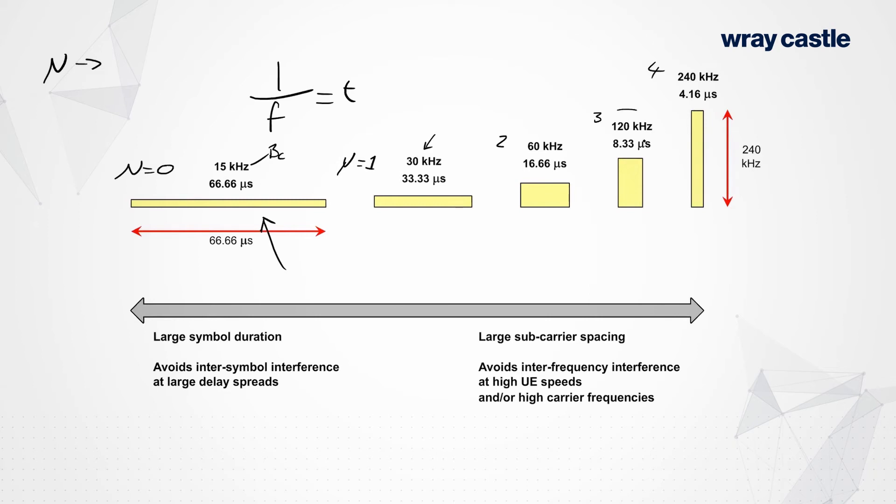So practically speaking, we only go as far as 120kHz. Now you'll notice as well that that reduces symbol period down to around about 8 microseconds. But that might be suitable for a very, very small cell in a very dense urban sort of downtown area.